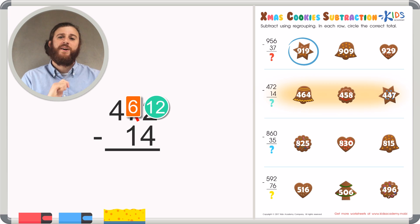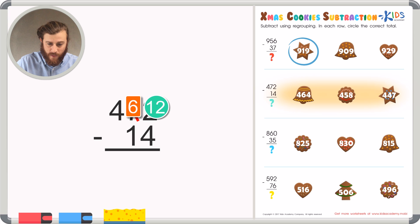12 minus 4, again, we'll use our fingers. 4, 5, 6, 7, 8, 9, 10, 11, 12. That gives us a difference of 8 in the ones place.